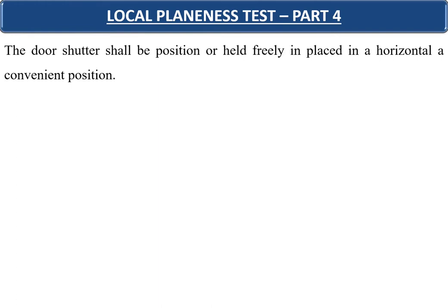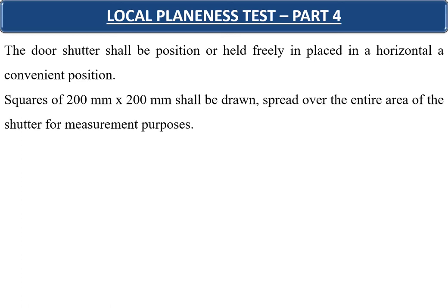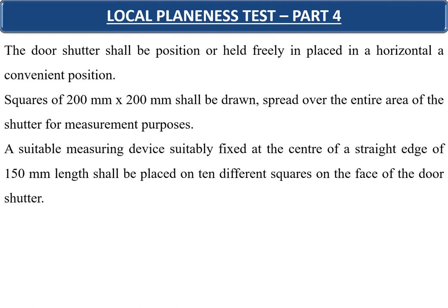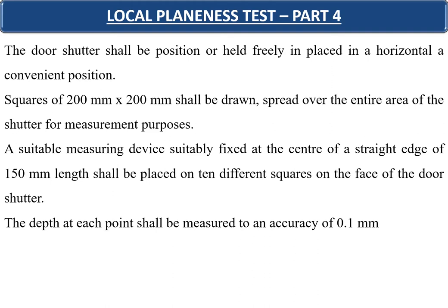Part 4 covers the local plainness test. The door shutters shall be placed in a horizontal or convenient position. Squares of 200 mm by 200 mm shall be drawn over the entire area of the shutter. A measuring device fixed at the center of a straight edge of 150 mm length shall be placed on 10 different squares on the face, and the depth at each point shall be measured to an accuracy of 0.1 millimeters.